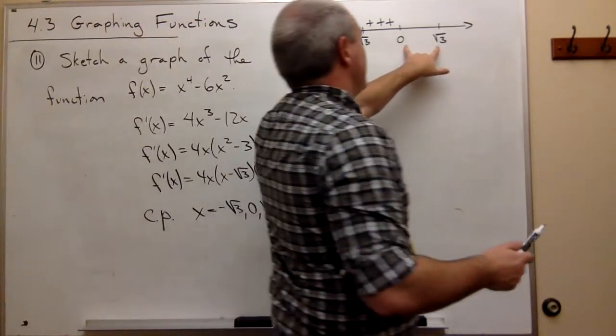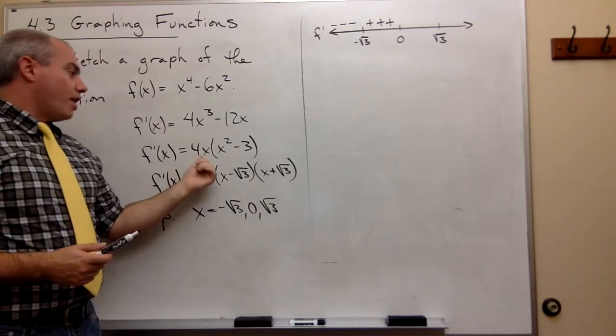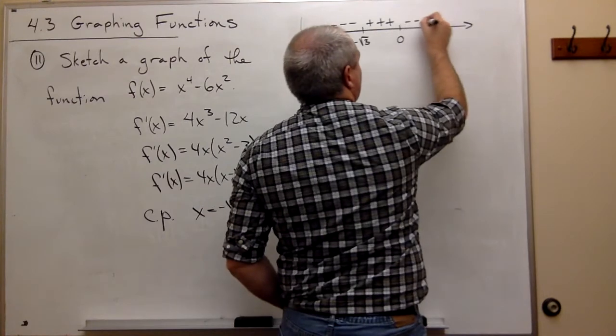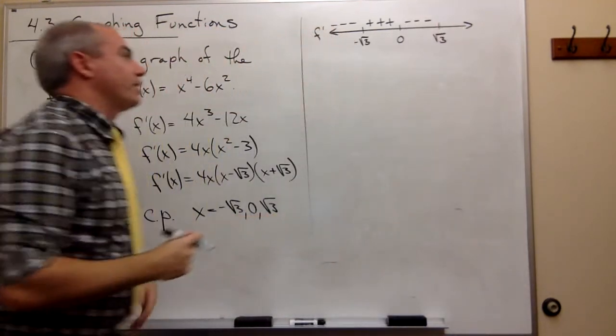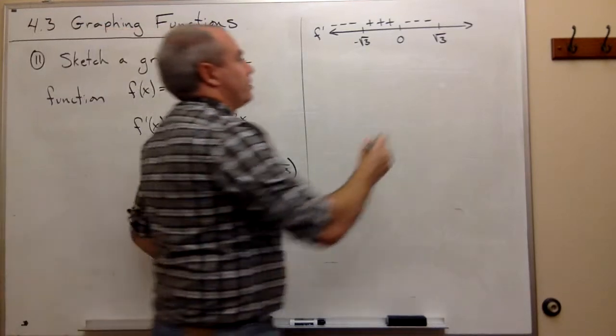Let's take something in this interval. How about 1? If I plug in 1, I get a positive here and a negative here. So that's negative. And if I take something like 2, I get a positive here and a positive here. So that's positive.